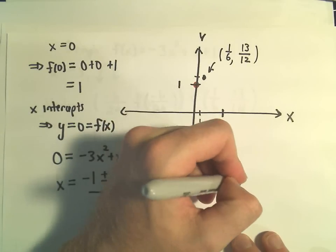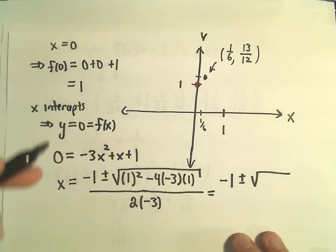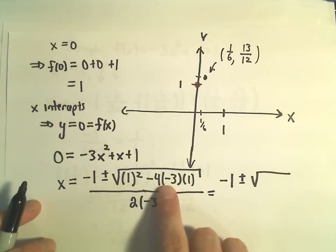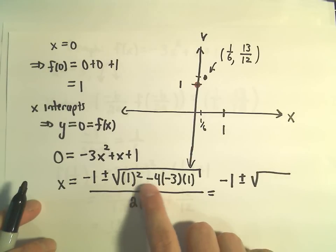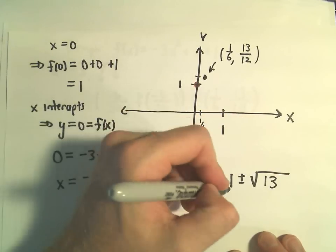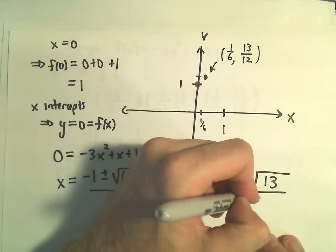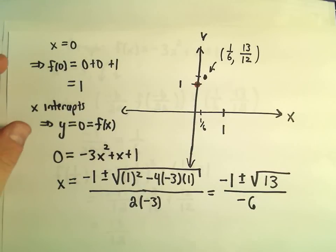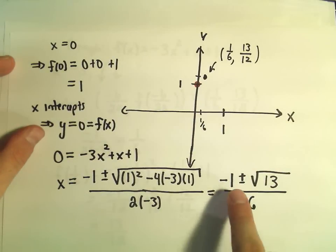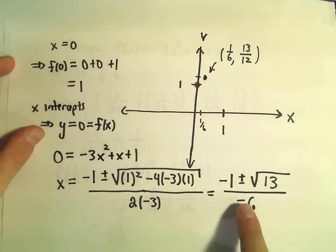And now we've got to clean this up a little bit. So we've got negative 1 on top, plus or minus the square root. 1 squared is 1, negative 4, negative 3 is going to be positive 12. 1 plus 12 is going to give us 13. In the denominator, we have negative 6.